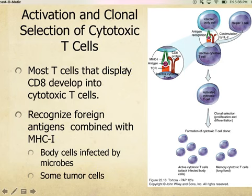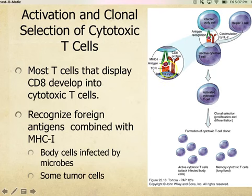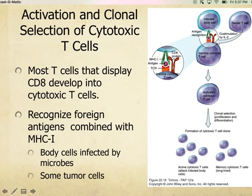Cytotoxic T cells kill infected target cells much like natural killer cells, but with one key difference: whereas natural killer cells recognize many different microbes, cytotoxic T cells have a very specific T cell receptor that must bind to a very specific antigen. There are millions of different types of cytotoxic T cells, and you need the right one that recognizes that particular antigen in order to bind to it and kill it.